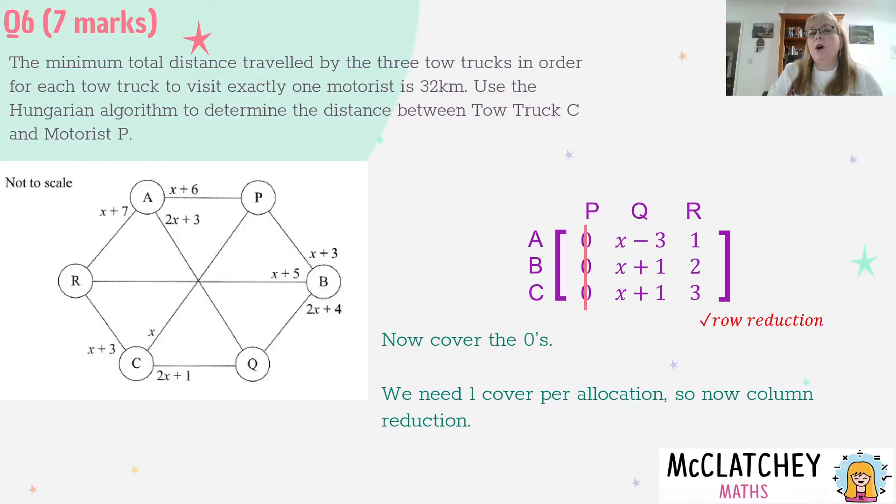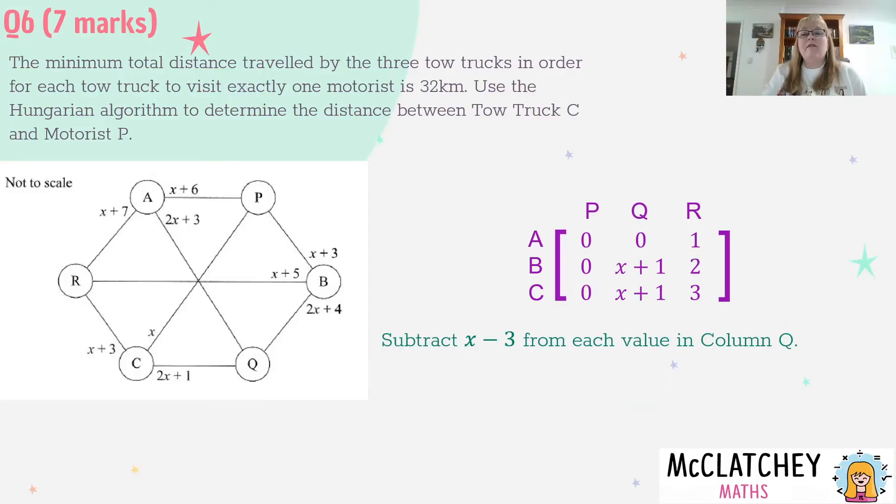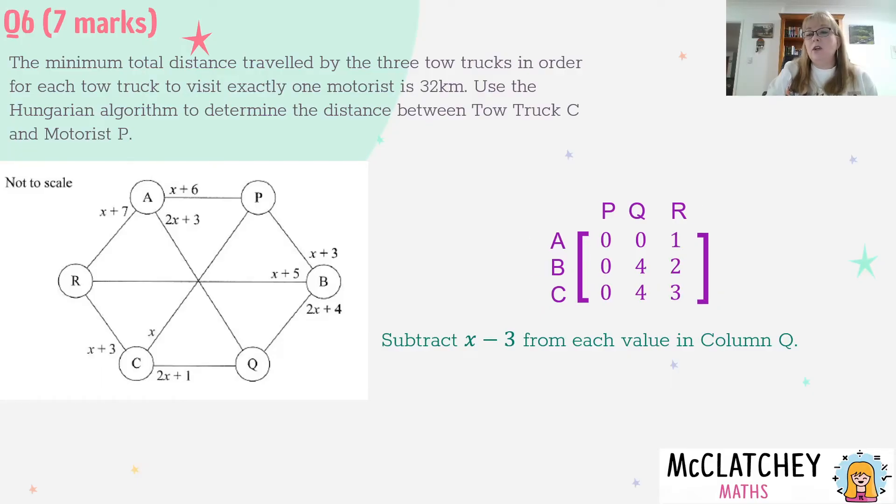Obviously the first column, column P, I don't need to do anything to - it's already zero. Let's look at the smallest value in column Q. At the moment I've got X with three taken away, so it's three less than X and the others have something added to the X. So X minus 3 is my smallest value. I'm going to take it away from every value in column Q. X plus 1 take away X take away 3 - the X and X will cancel. Plus 1 take away minus 3 makes it positive 4, and the same happens underneath, so that'll be a 4 as well.